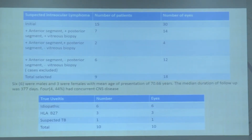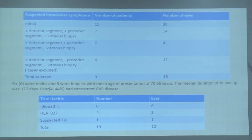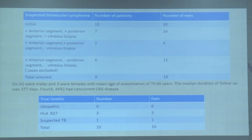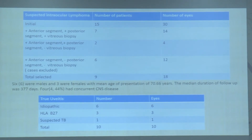Initially we had 15 patients, 30 eyes of suspected intraocular lymphoma. We excluded 6 patients in whom biopsy was not satisfactory and showed no typical lymphoma cells, leaving us with 9 patients and 18 eyes. Four patients had concurrent CNS disease at presentation. Total uveatic patients were 10, with idiopathic cases being the maximum at 6.